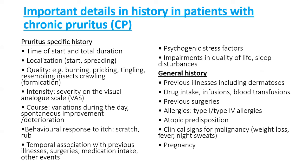Once a patient with chronic pruritus comes to you, it is mandatory to take a pruritus-specific history and a general history. The pruritus-specific history includes: time of start and total duration, localization (where it is localized, from where it starts and how it spreads), quality of pruritus (burning, stinging, pricking, tingling, formication — resembling insect crawling), intensity marked on a visual analog scale, course and variation during the day, spontaneous improvement and deterioration, and behavioral responses such as scratching or rubbing. Also ask about temporal association with previous illnesses, surgeries, medications, any psychological stress, and whether the itch affects quality of life and causes sleep disturbance.